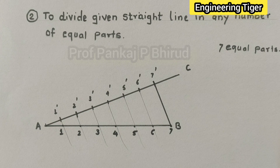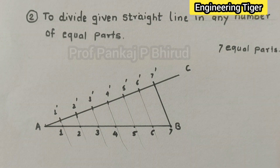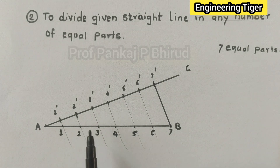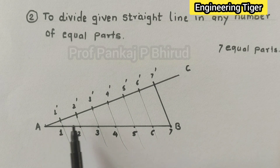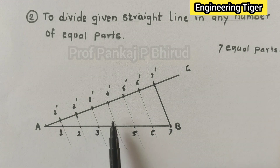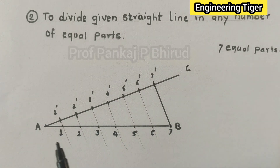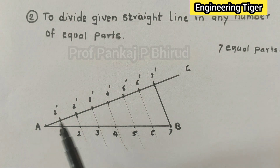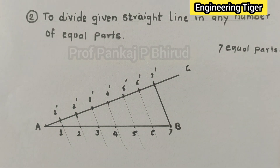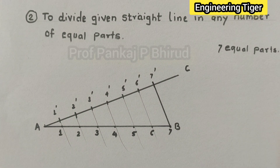The seven equal parts are now divided. The distance from A to 1 will be the same as 1 to 2, 2 to 3, 3 to 4 — three equal parts. So every segment will be divided into seven equal parts. Similarly, we can divide line AB into any number of equal parts. Take five minutes for drawing this construction.